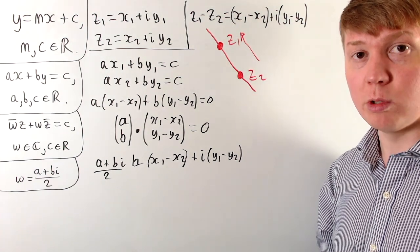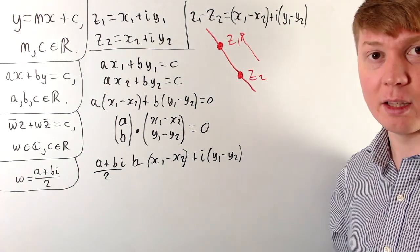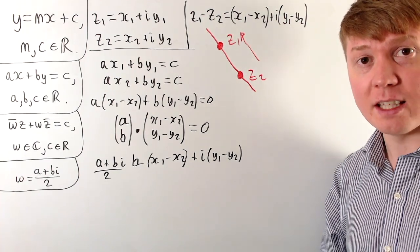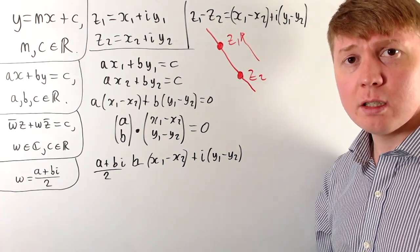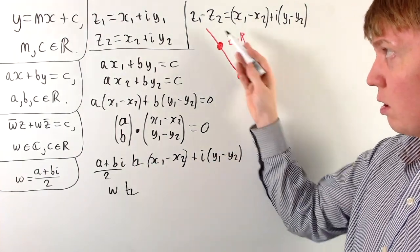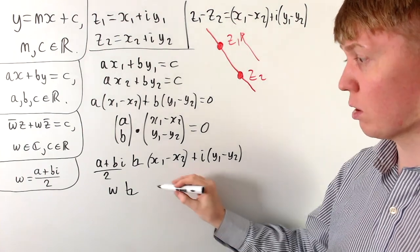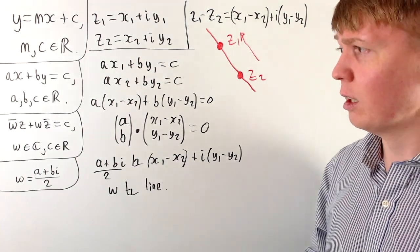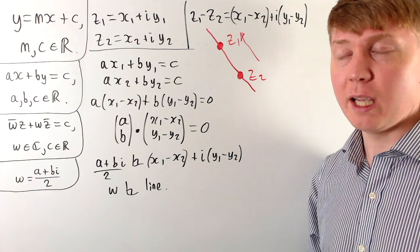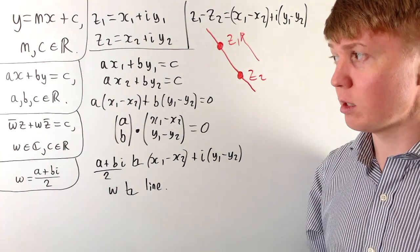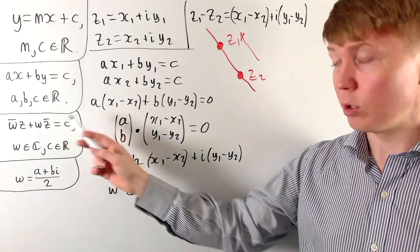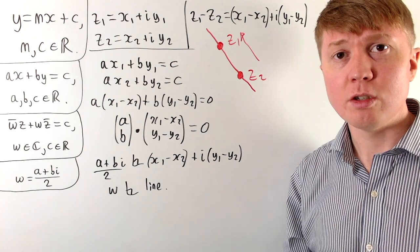For any two distinct points z₁ and z₂ on the line, z₁ − z₂ points in the direction of the line. So w = (a + bi)/2 is perpendicular to the direction vector of our line — in other words, w is perpendicular to the line itself. We have this neat equation for a straight line in the complex plane, w̄·z + w·z̄ = c, where the complex number w, thought of as a vector from the origin, is perpendicular to the line.